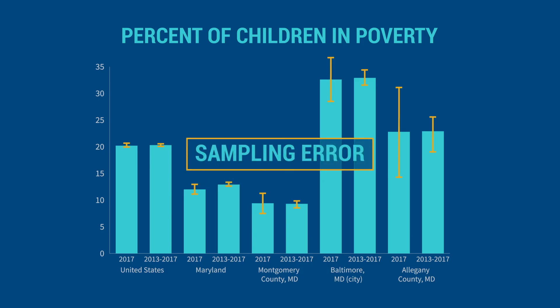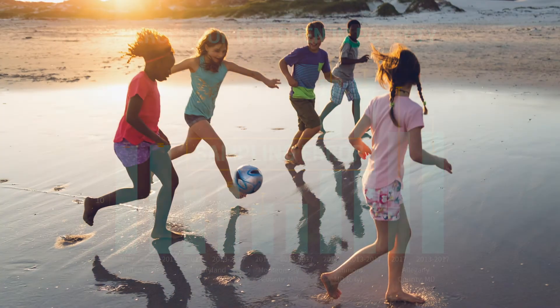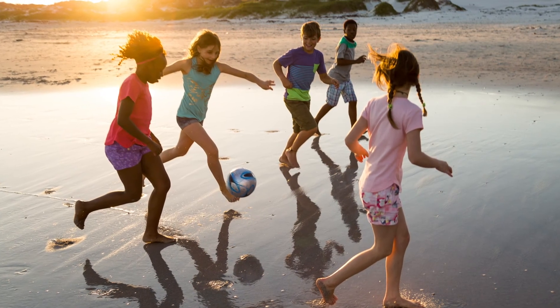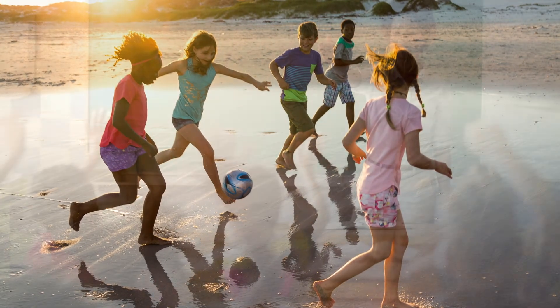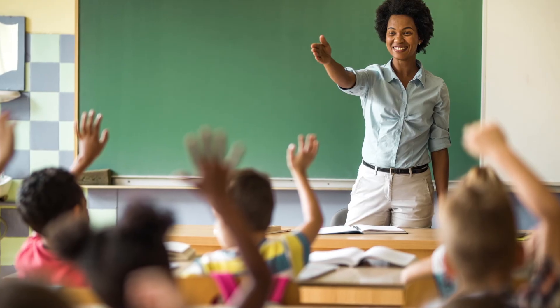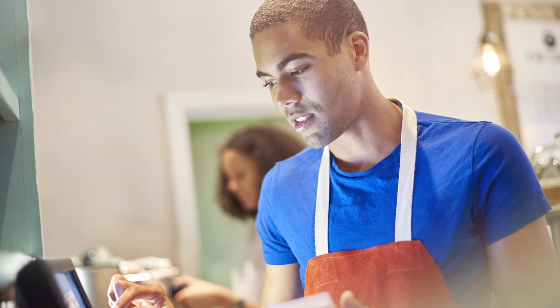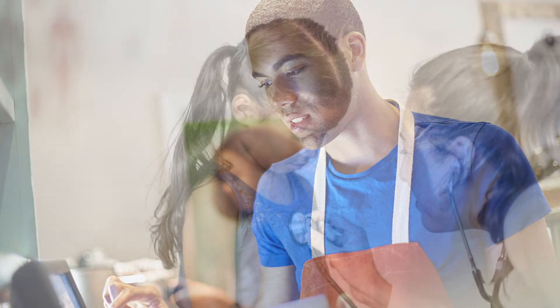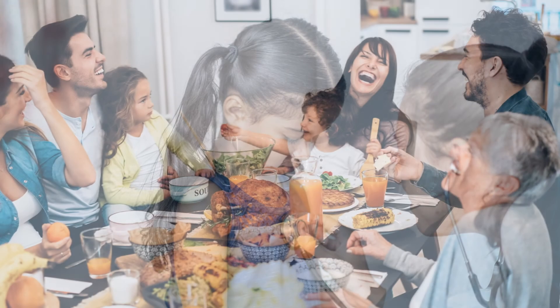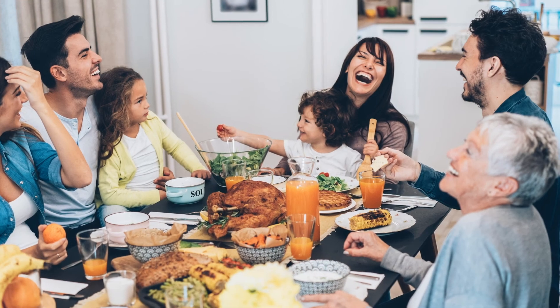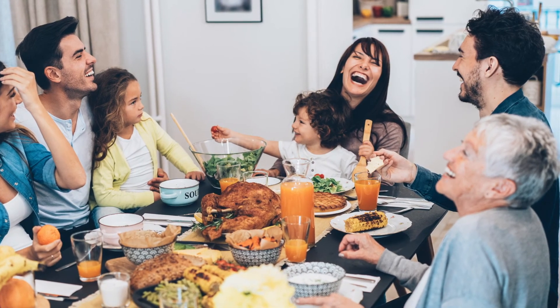In general, the larger the sample, the smaller the level of sampling error. The ACS includes many topics that are relevant for child well-being, such as school enrollment and educational attainment, employment status, income, health insurance coverage, and family structure. Many ACS data tables are also available, disaggregated by age, sex, race, and ethnicity.